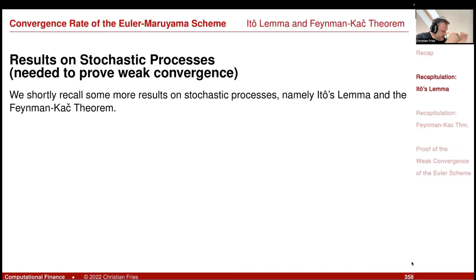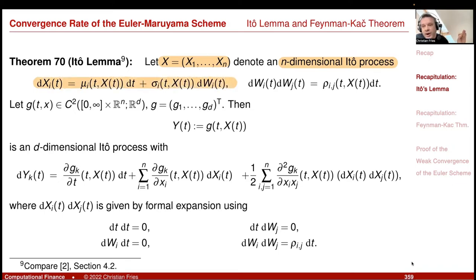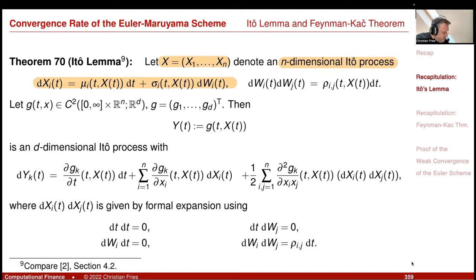Let us shortly recall Itô's lemma and Feynman-Kac theorem. For Itô's lemma, here is one possible version in n dimensions. Let x denote an n-dimensional Itô process with components x_1 to x_n. Every component is an Itô process: dx_i = mu_i dt + sigma_i dW_i. Each component has its own mu coefficient, sigma coefficient, and its own Brownian driver dW_i.